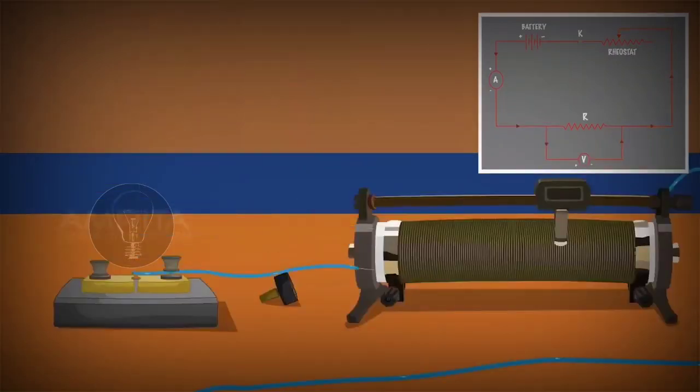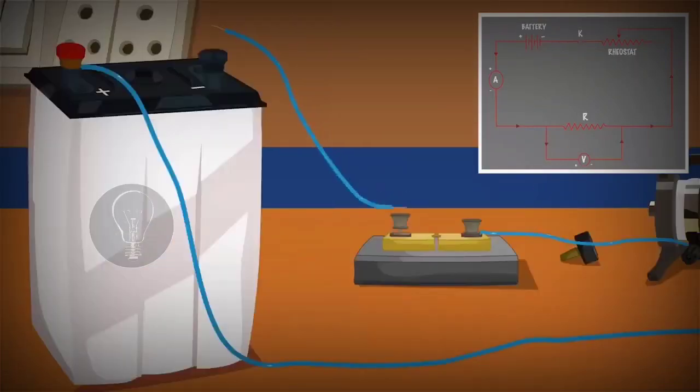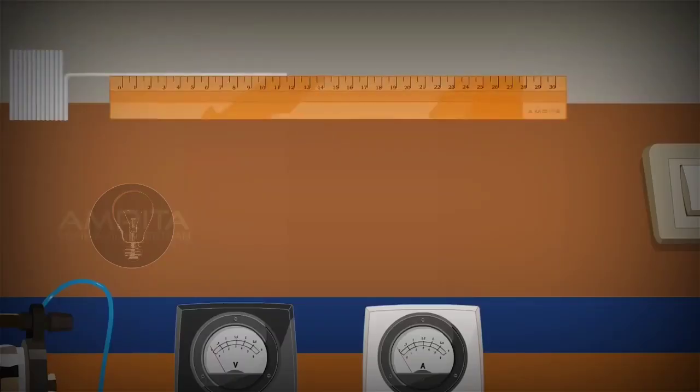Connect the lower terminal of the rheostat to one end of the one-way key, i.e. the key should be removed using a connecting wire. The other free end of the one-way key is connected to the negative terminal of the battery.